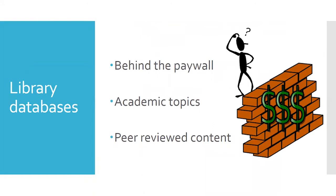How are library databases different from Wikipedia? One important distinction is that they're often not free — your tuition and government funding enables the library to purchase subscriptions for them, which you can access through the library's website. That's why it's important to go through the library's website to get to those resources. It's like a portal, because if you try to access them straight through Google — say jstor.com while not on campus — you'll be directed to pay for content when you really don't need to.